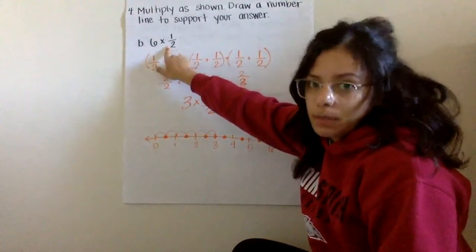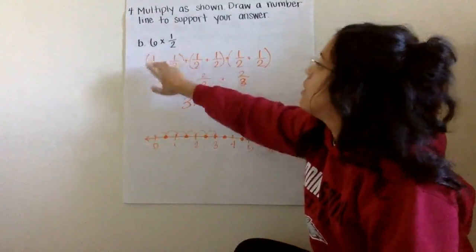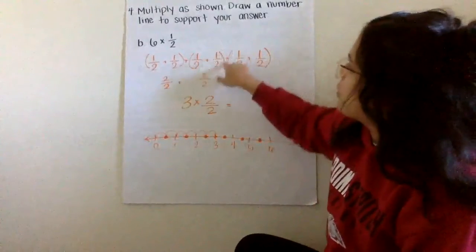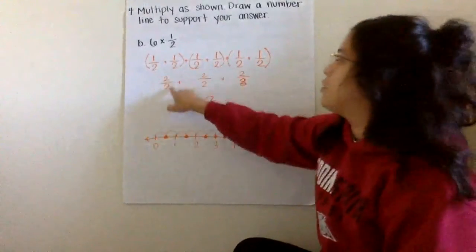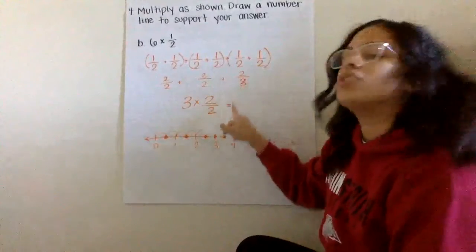Repeated addition and multiplication go hand in hand. Then as I look at these, I notice that I can group these halves together to create wholes. Two halves plus two halves plus two halves.